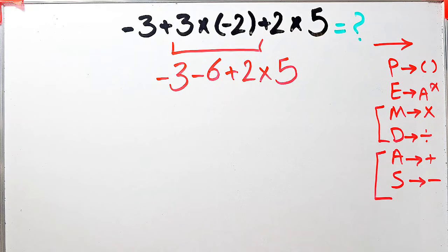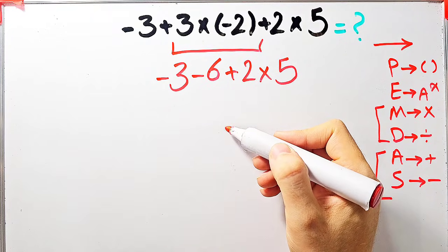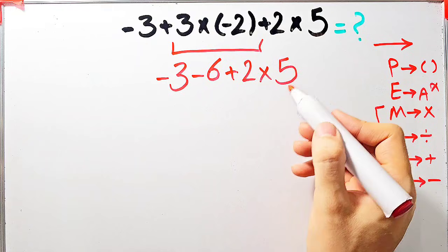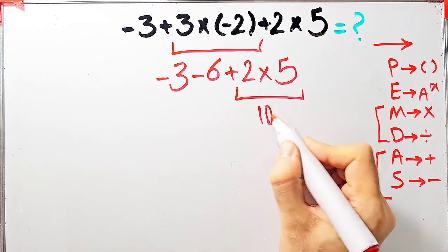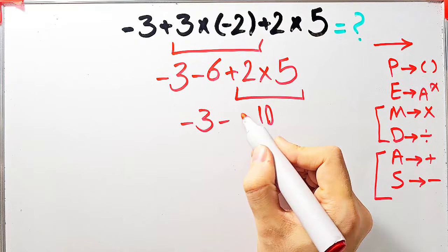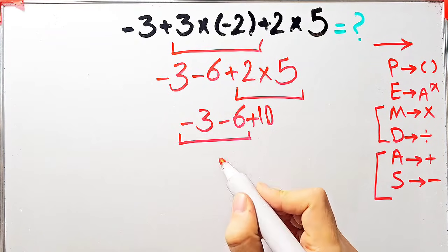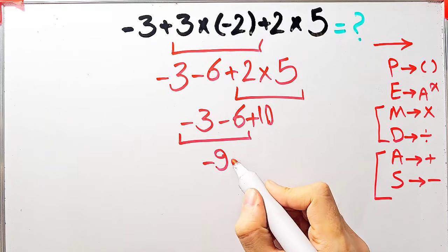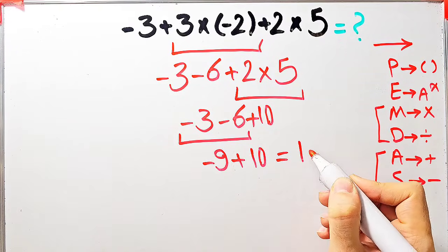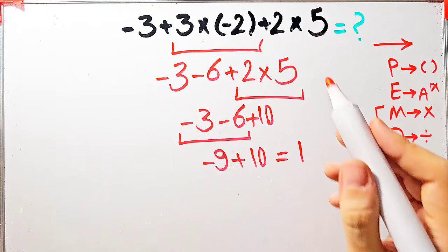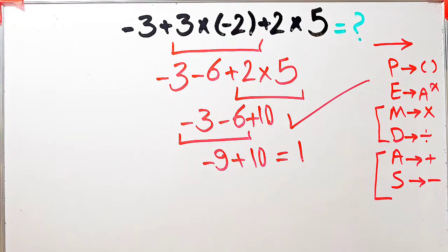In this step we have subtraction, multiplication, and addition. First we simplify this multiplication: 2 times 5 equals 10. Now the question is negative 3 minus 6 plus 10. Negative 3 minus 6 equals negative 9, and negative 9 plus 10 equals 1. The final answer of this question equals 1.